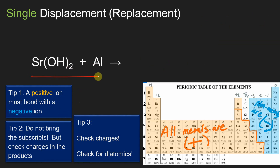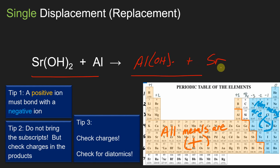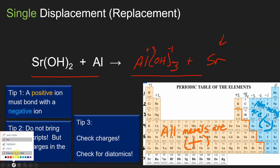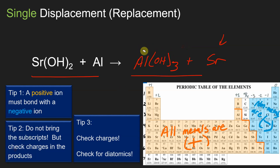For the last example, write the reactants and products with charges checked and diatomics noted. Strontium ends up on its own — it's not a Brinkelhoff element, so no subscript two. The other element has a plus three charge and hydroxide is minus one, so we need three hydroxides, giving Al(OH)₃. Erase charges and balance.